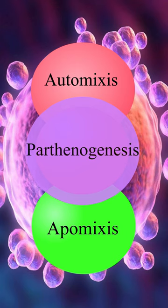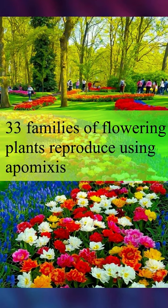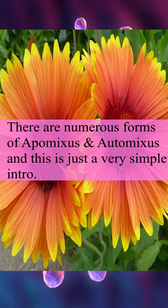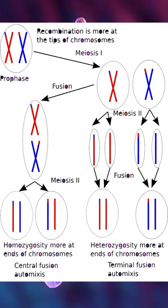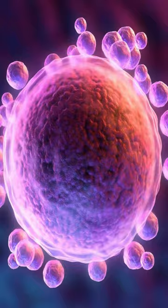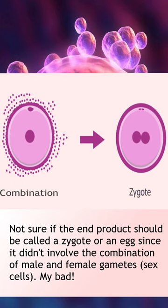Haplomyxis, a form of reproduction primarily found in plants where sex cells undergo cell division to create a copy of the parent organism, and automyxis, where haploid cells generated by the mother fuse to produce a zygote.